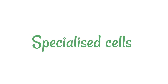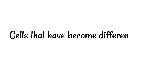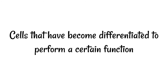When you've studied cells in the past, you've probably looked at the classic plant and animal cell, but in actual fact there are lots and lots of different types of cells, even within plants and within animals. Specialized cells are cells that have become differentiated to perform a certain function.